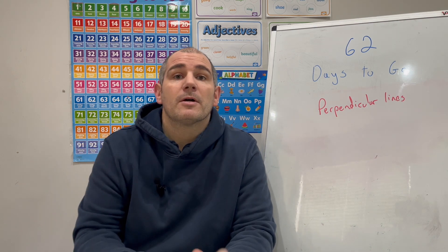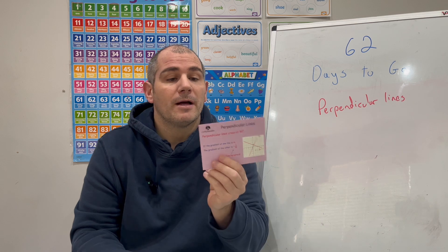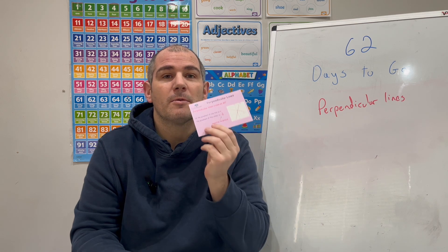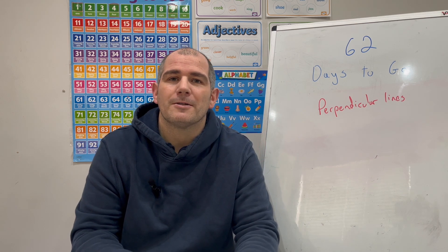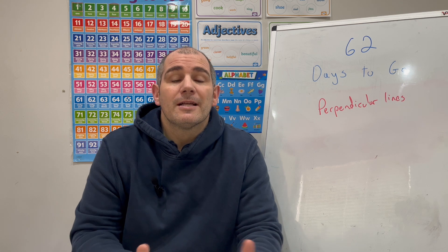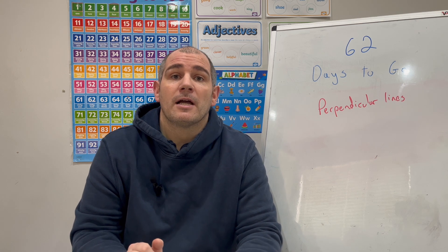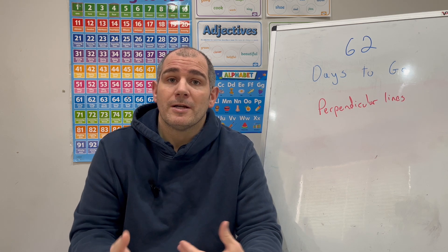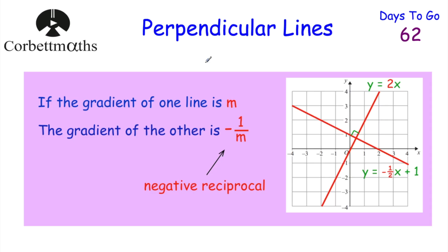So in today's video we're going to look at perpendicular lines. If you've got the corporate marriage revision card, card number 50 is a really useful one for you as well. I'm going to go through some questions, and then there'll be something for you to try as well. So let's get started.